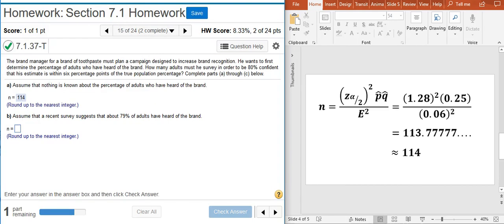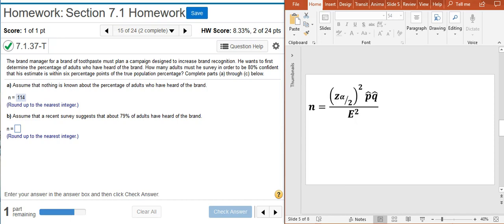And now the second part, Part B, asks and we repeat the calculation, but now we're going to assume that 79% of adults have heard of the brand. We can easily repeat the calculation with the new numbers, so I'm going to go back here and start over with my original equation for determining sample size, and now I'm going to plug in new values.